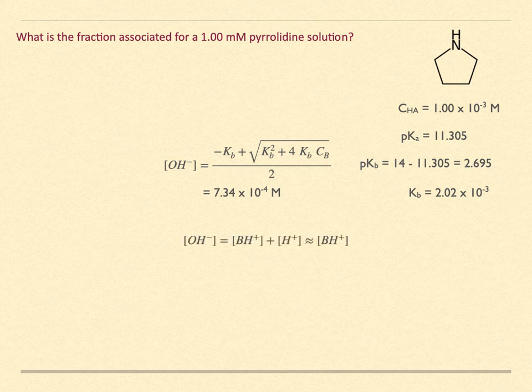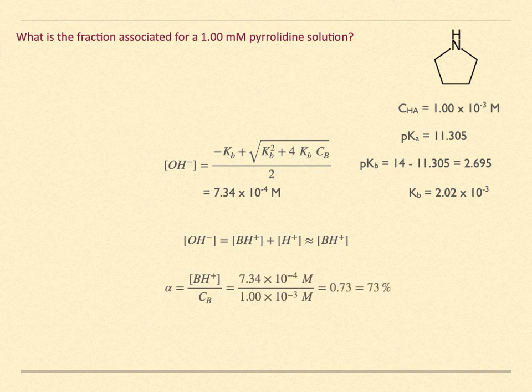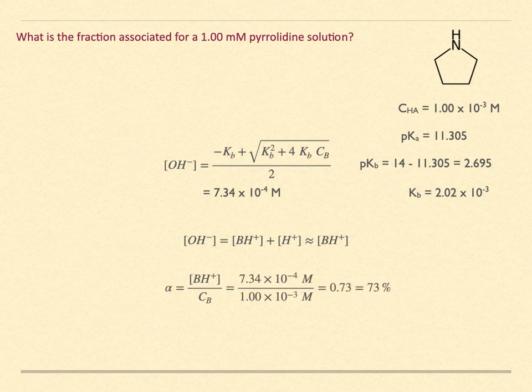This time, the hydroxide is the dominant species, and the hydronium ion has a very small concentration. We can therefore equate the pyrrolidineum ion concentration with the hydroxide concentration and substitute this, along with the formal base concentration, into the expression for fraction associated. The fraction associated is 0.73, or 73%. This is indeed a very strong weak base, but it is not completely associated, so it's not a strong base.